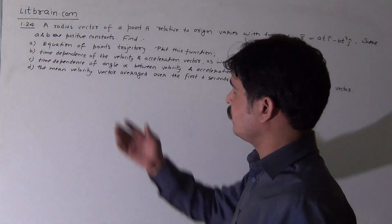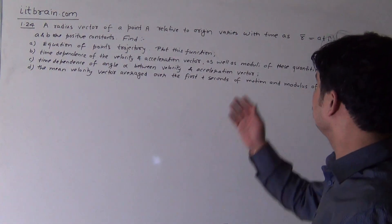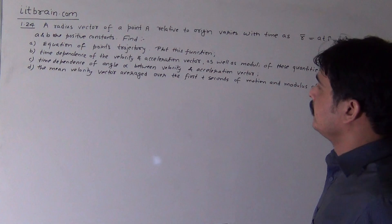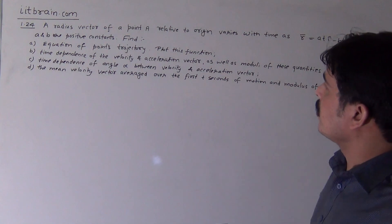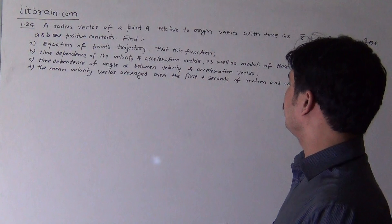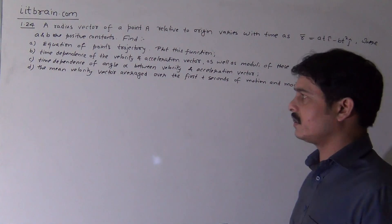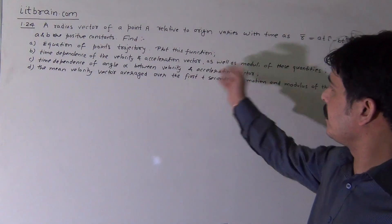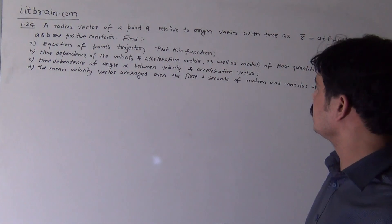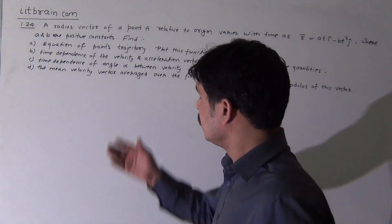Hello students, this is problem 1.24. The radius vector of a particle related to the origin varies with time as r = at·î - bt²·ĵ. We have to calculate the equation of the point's trajectory and plot this function, the time dependence of velocity and acceleration vectors as well as the modulus of these quantities.